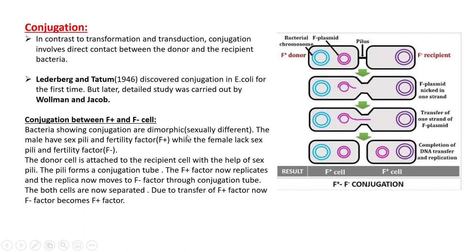In conjugation, bacteria show dimorphism and are sexually different. The male donor cell has sex pili and the fertility factor, known as the F+ cell, while the female F− cell lacks both. The donor cell attaches to the recipient via sex pili, forming a conjugation tube. The F+ factor replicates and a copy moves through the conjugation tube into the F− cell. After transfer and replication, the cells separate and the F− cell is converted into an F+ cell, resulting in two F+ cells.